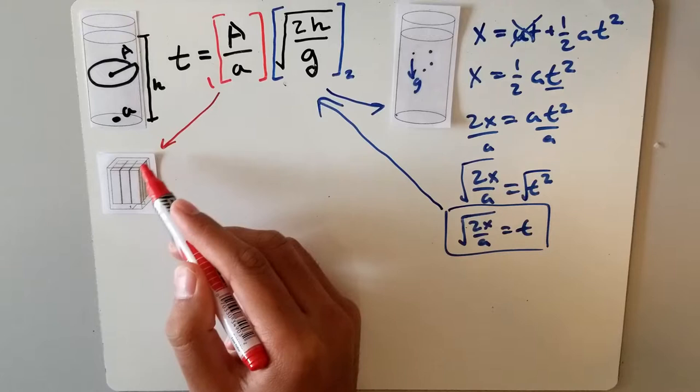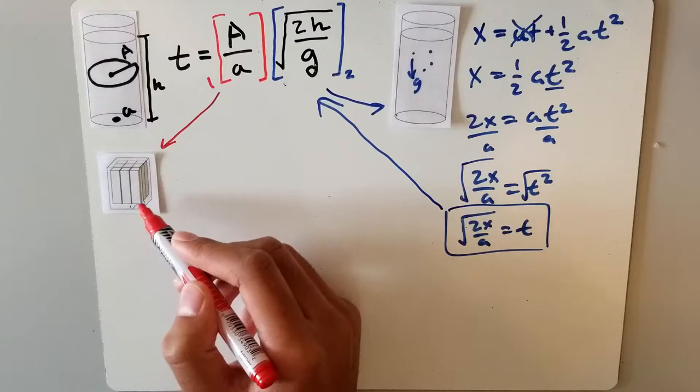This gives us a situation like this, where there are a bunch of columns with the same cross-sectional area as the hole, being one by one.